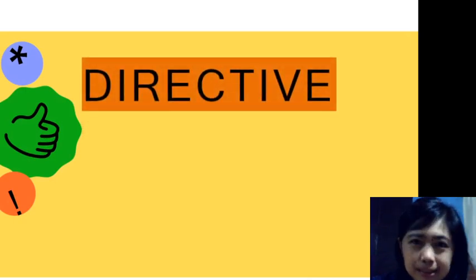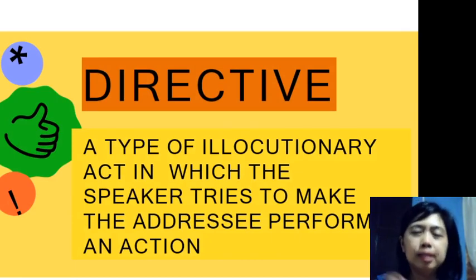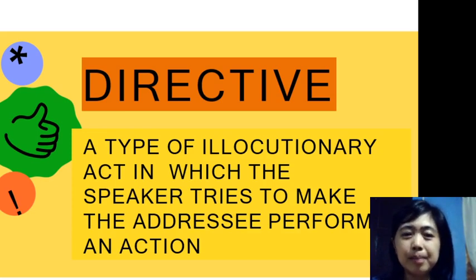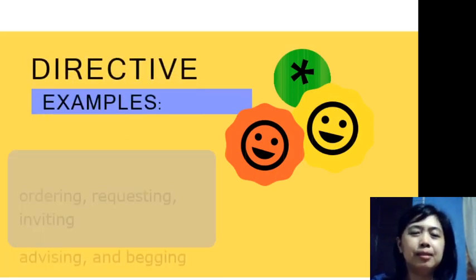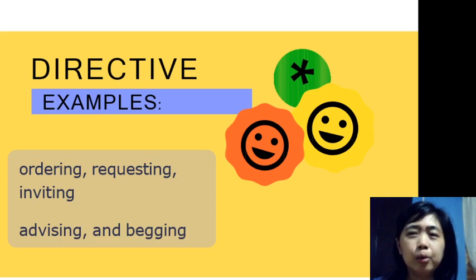Next, we have directive. This is a type of illocutionary speech act in which the speaker tries to make the addressee — the receiver of the message — perform an action. Because it is directive, it involves giving instruction. Examples include ordering, requesting, inviting, advising, and begging.